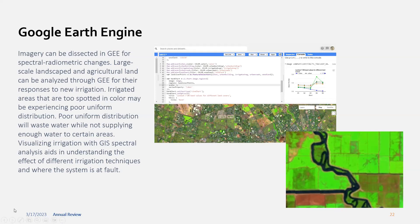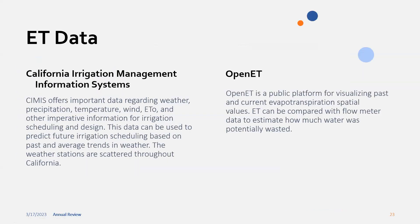So evapotranspiration data. If you're in California, the California Irrigation Management Information Systems (CIMIS) is my go-to. If you're outside of California, there are lots of other data sites — federal government weather sites and others — to pull weather and evapotranspiration data from. CIMIS offers important data regarding weather, precipitation, temperature, wind, ETO, and other information imperative for irrigation scheduling and design. This data can be used to predict future irrigation scheduling based on past and average weather trends. The weather stations are scattered throughout California, so you can pick the station closest to you.